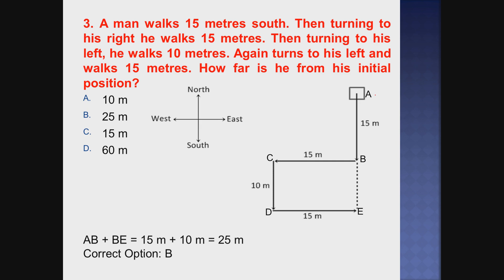The man starts at position A. From A to B, he travels south - 15 meters, straight ahead. Then he turns right and travels 15 meters from B to C. Then from C to D, he turns left and travels 10 meters. Then again he takes a left and travels 15 meters from D to E.